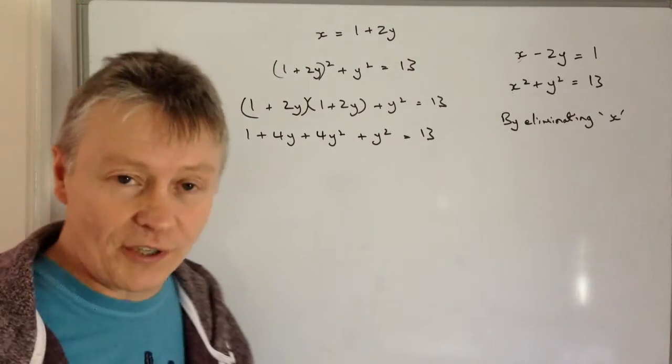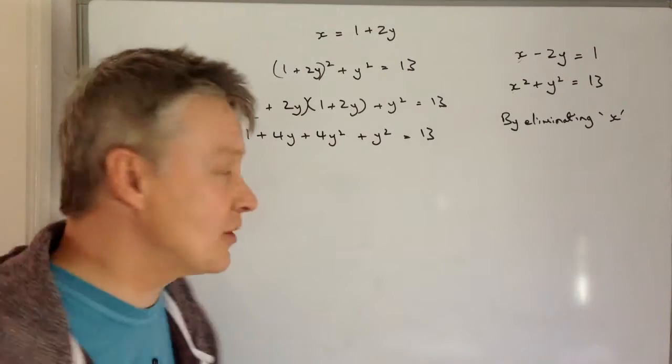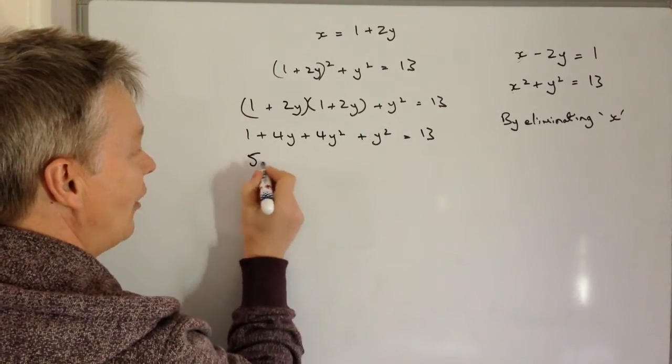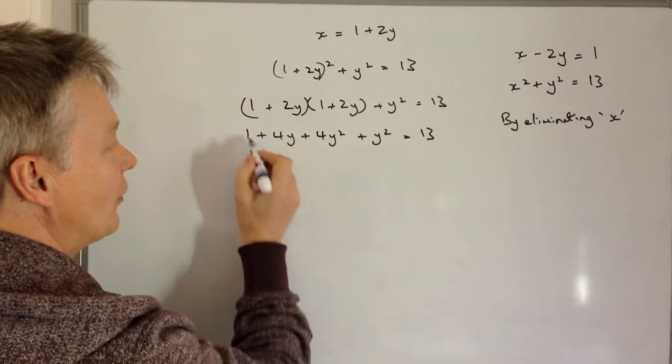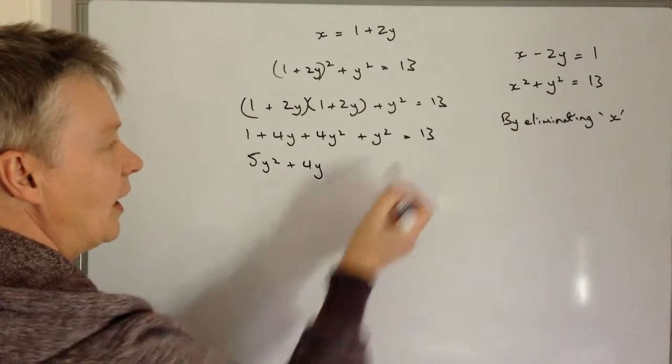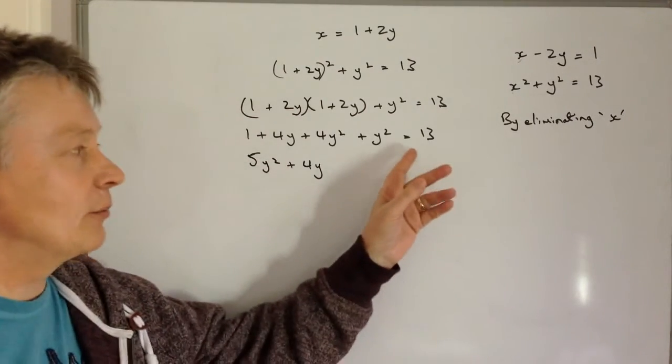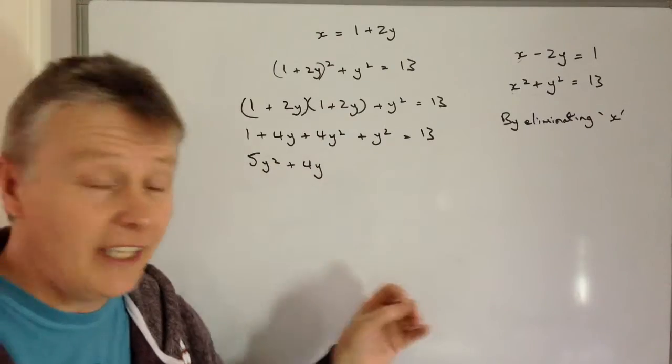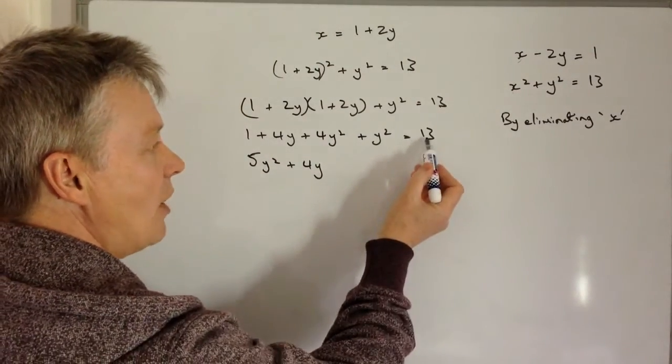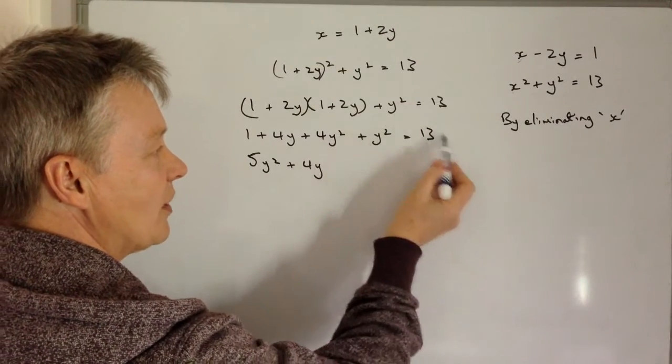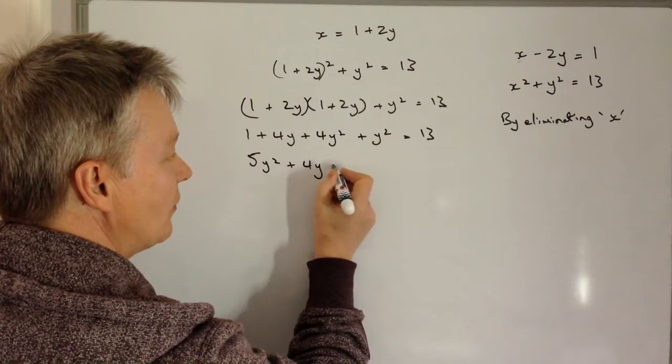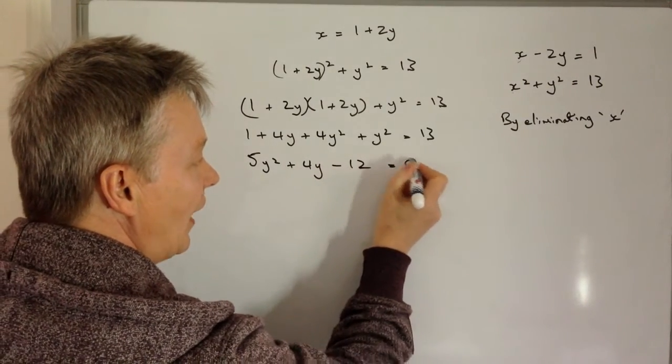So now I need to gather up the like terms, and that will give me a quadratic equation that I can then solve. So 4Y squared plus Y squared is 5Y squared. I've got plus 4Y, and then I've got 1 here and 13 here. Well I need this to equal 0 in order to solve it. So I'm going to minus 13 from both sides of the equals sign, that becomes 1 minus 13 which is minus 12, that equals 0.